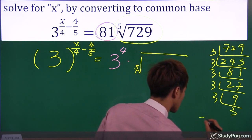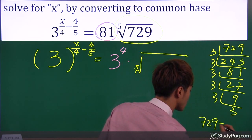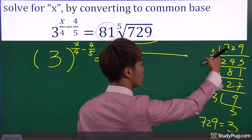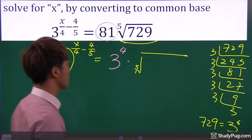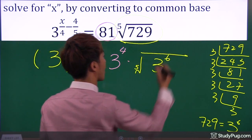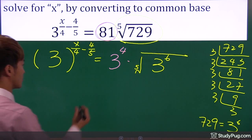So 729, we can write that as three to the power of one, two, three, four, five, six. So 729 is three to the power of six. Now, next.